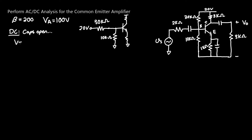To find the Thevenin equivalent, we first find V_Thevenin by taking the voltage division across the 10 kΩ resistor, since that potential is what will eventually be amplified. So we compute 10 kΩ over (10 kΩ + 30 kΩ) times 20 V, which yields 5 V.